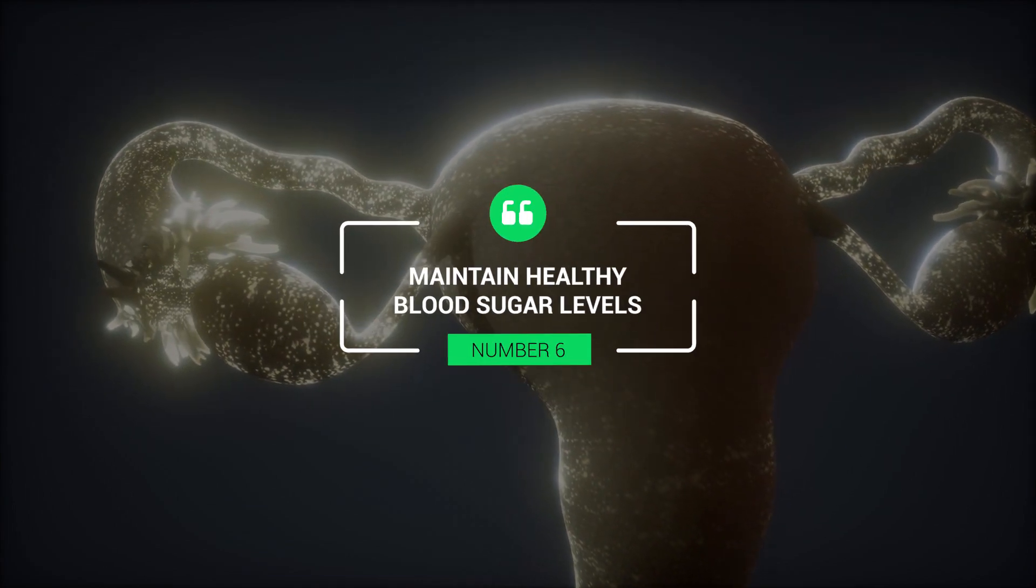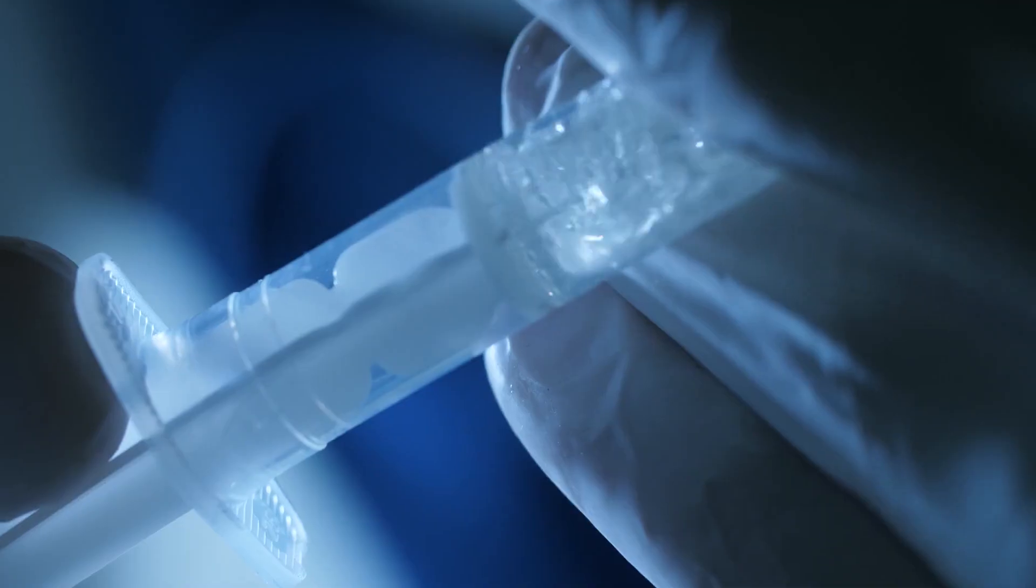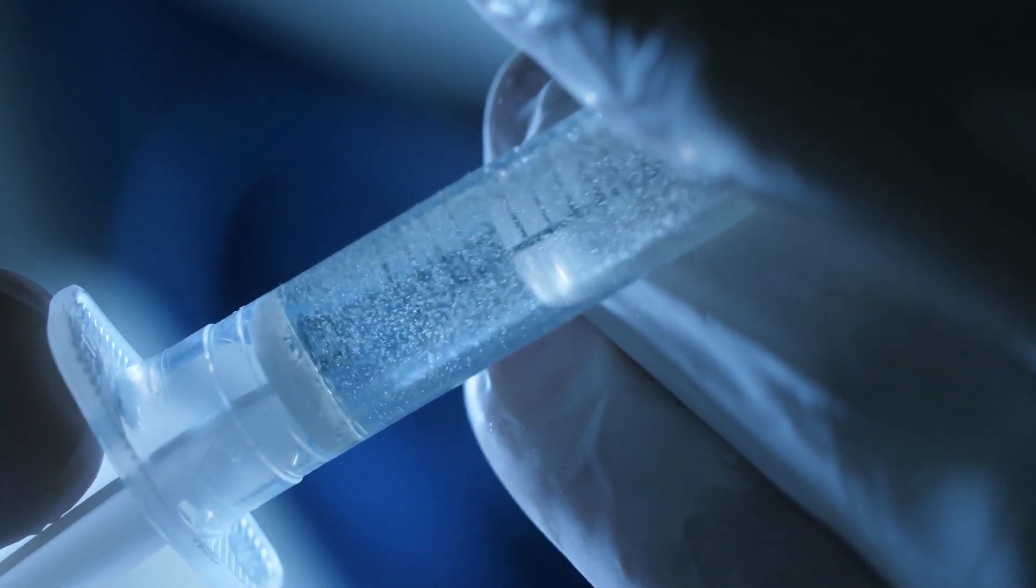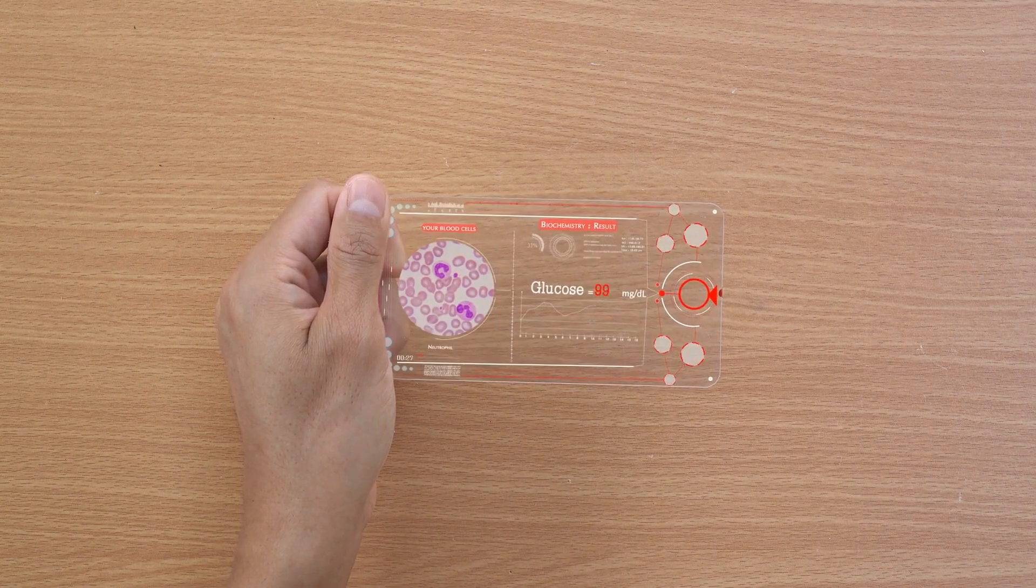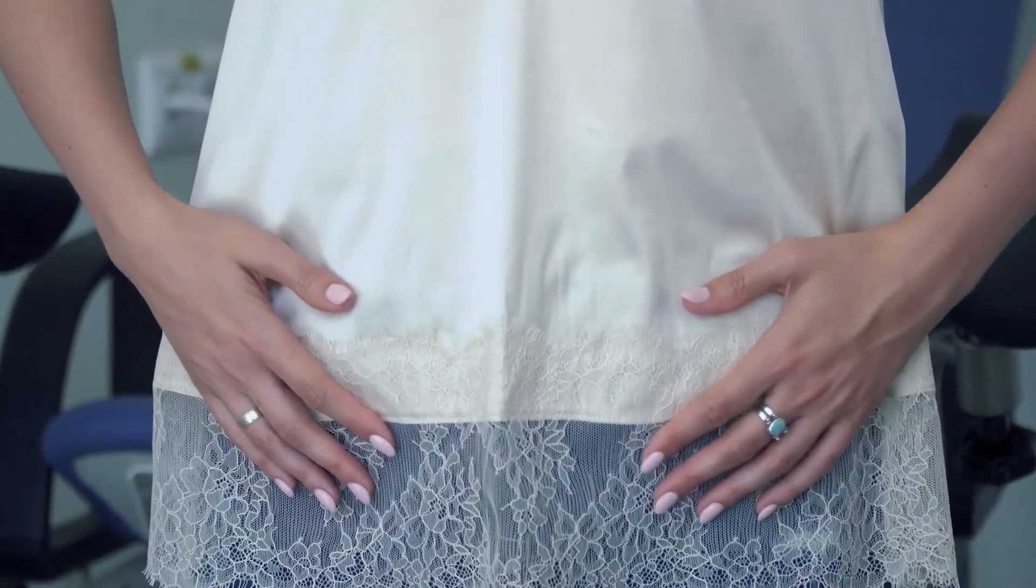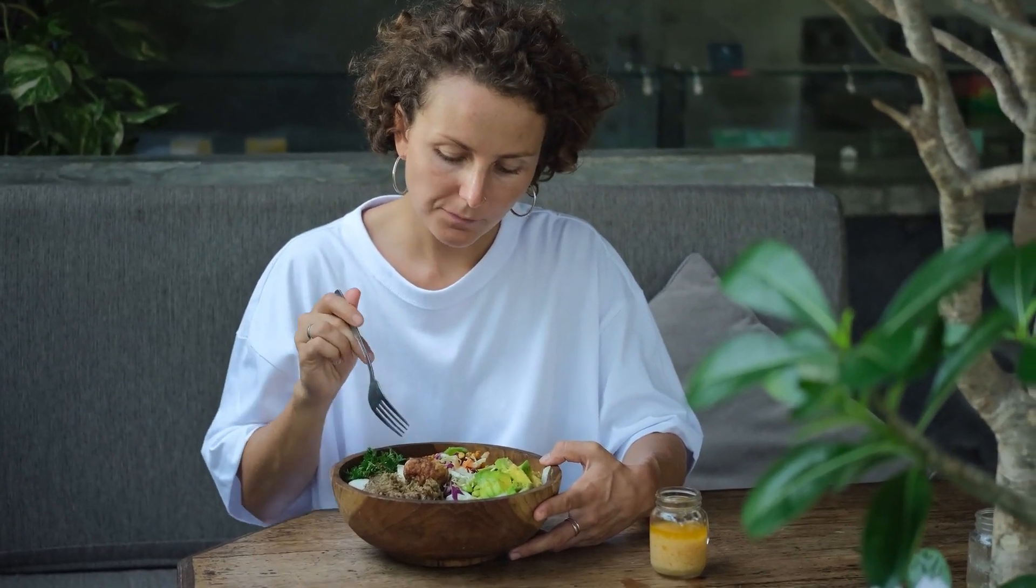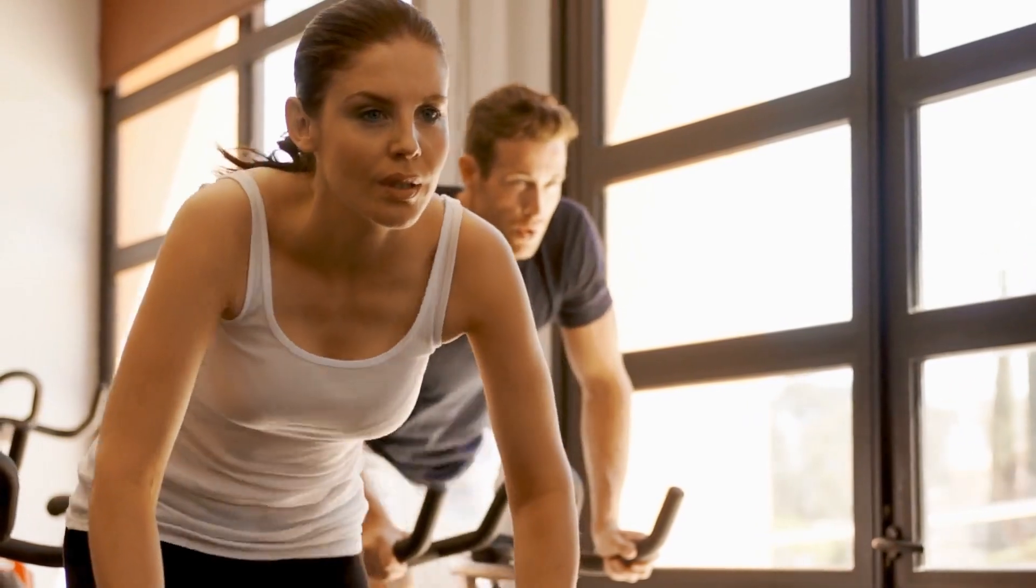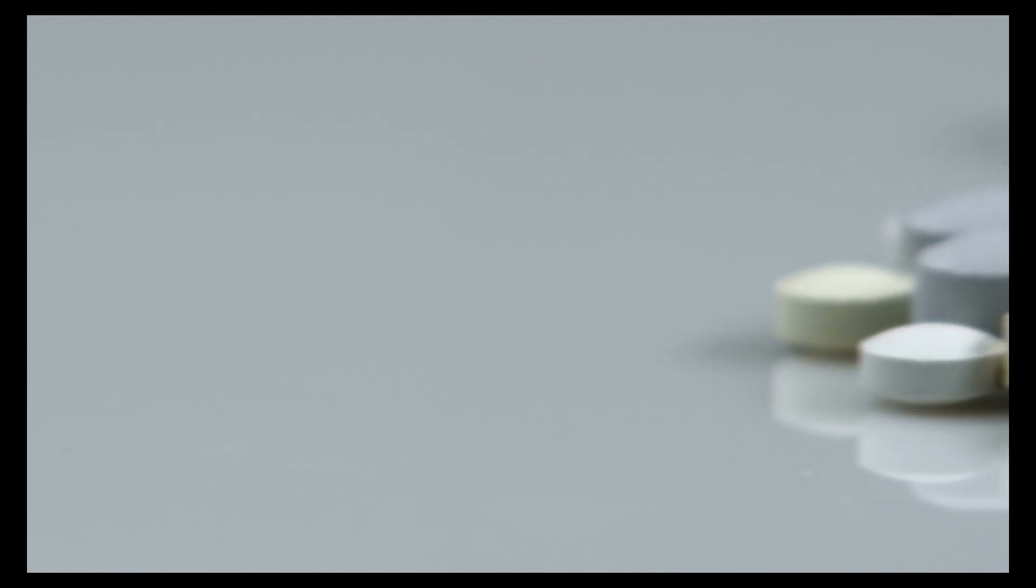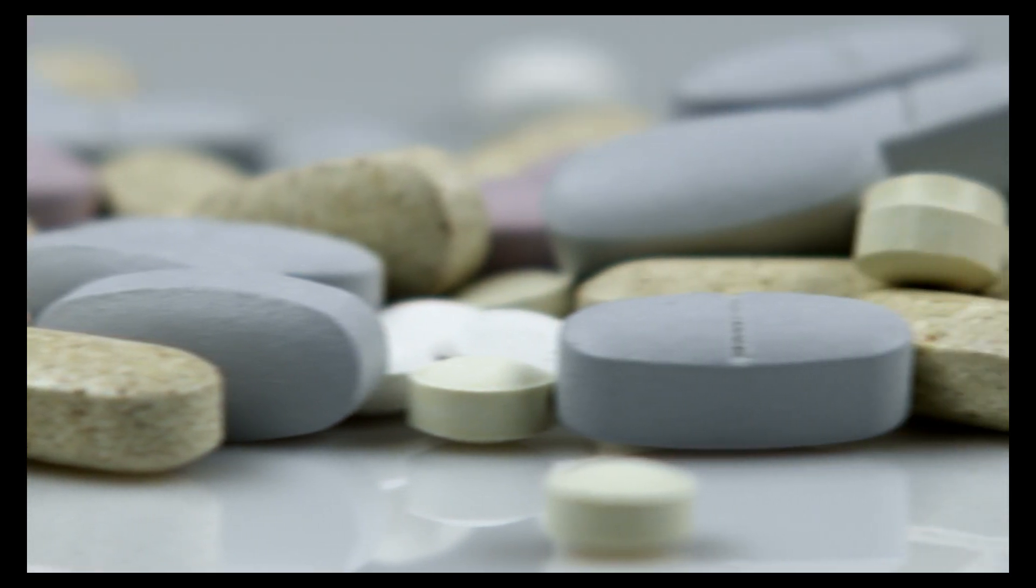6. Maintain healthy blood sugar levels. High blood sugar levels can reduce progesterone levels in the body. Insulin which regulates blood sugar levels is also involved in producing hormones such as progesterone. When blood sugar levels are consistently high, the body may become resistant to insulin. This condition can lead to hormonal imbalances. To increase progesterone levels, you must maintain healthy blood sugar levels through balanced diets, regular exercise routines, and effective stress management techniques. Additionally, herbal supplements such as chaste berry and maca root may help support progesterone balance and promote healthy ovulation in women.